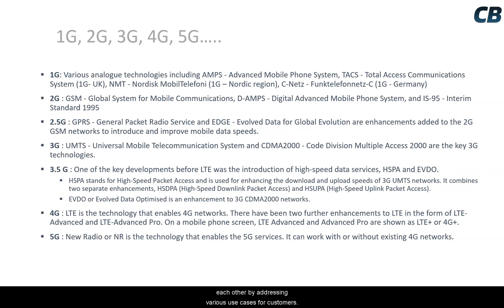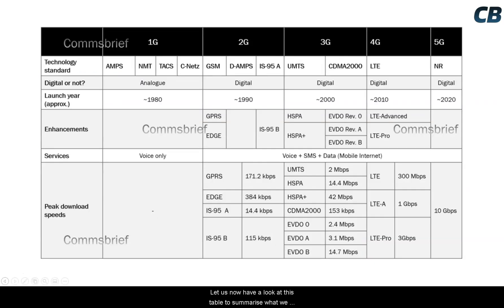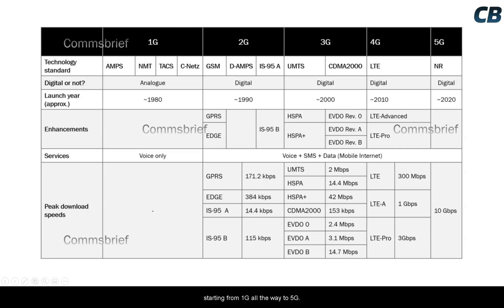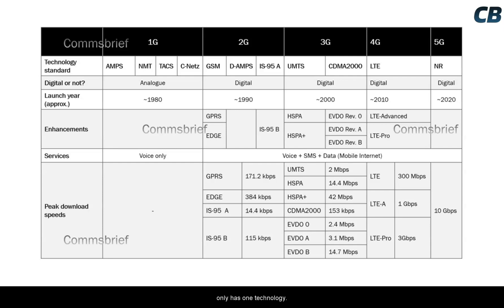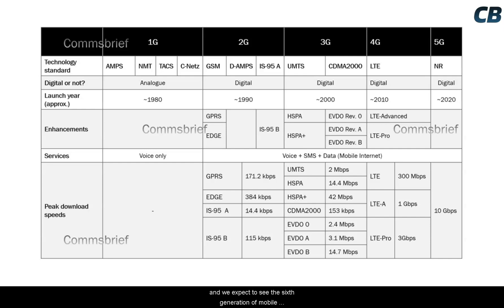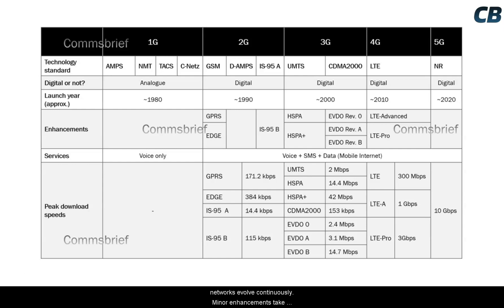Let's look at this table to summarize what we've learned. In a nutshell, there are five generations of mobile networks from 1G to 5G. The first generation had at least four different network technologies, whereas 5G has only one. There is usually one new generation every 10 years, and we expect to see 6G around 2030. Halfway between generations, there are major enhancements to ensure networks evolve continuously, with minor enhancements taking place more frequently.